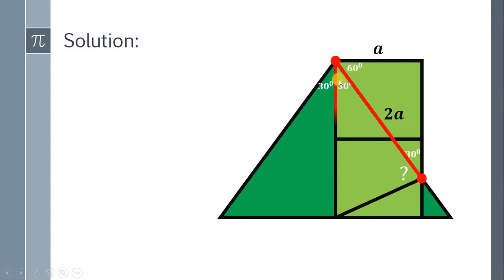Now, take note that this is also 2A. It follows that we have an isosceles triangle. Now, in an isosceles triangle, the base angle are equal. If we let this missing angle be equal to x, this is also x because the base angle of this isosceles triangle are the same.